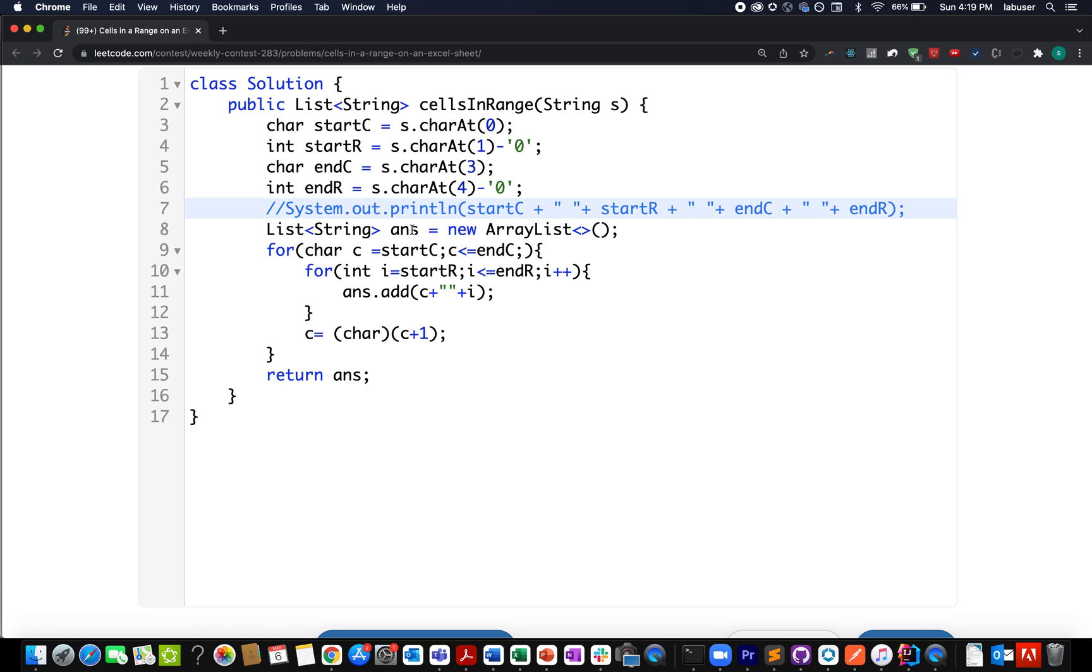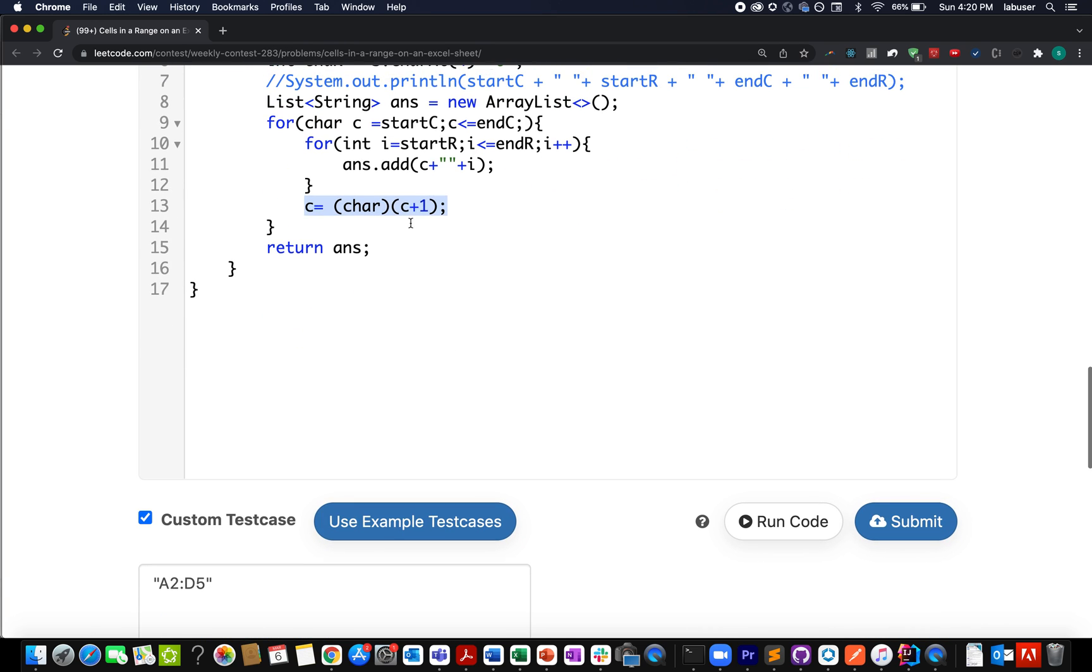What I'm going to do is I've created the answer list here. I start iterating in the column-wise fashion, then I iterate in row-wise fashion. I add my character and the current element, the index value, the row on which I'm iterating. I create a new string corresponding to it and add it to my answer. With each iteration, I increment the character value for the next column.